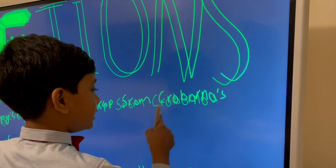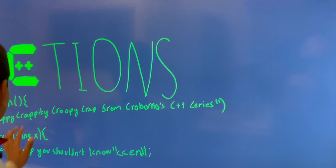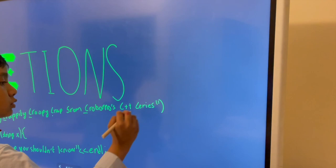C++ series. So, that's what we're going to define it as. Notice the alliteration. Crappy, crappity, croupy, crap from Craborno's C++ series.